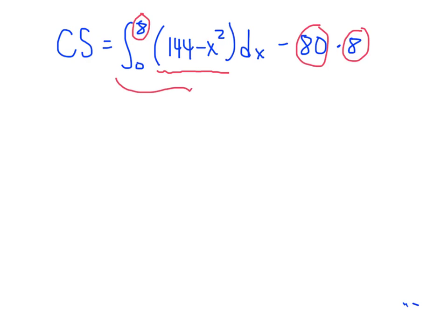Now don't forget, we've learned how to use our technology to calculate this definite integral. So you could plug that into either the online tool that we had, GeoGebra, or into your graphing calculator. You can crank out that value. But you can also do it the old-fashioned way using the antiderivative, which I'll do right here. It's just 144x minus x cubed over 3. And I'm going to evaluate that between 0 and 8.